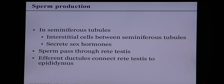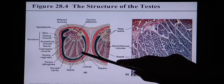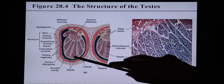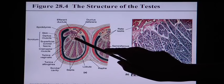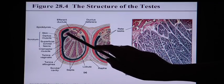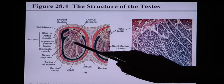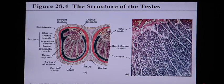Not only does sperm production happen in the testicles, but sex hormones like testosterone are also produced there. Once sperm are produced, they pass through what's called the rete testis, then into the efferent ductules, and finally to the epididymis. So the pathway is: seminiferous tubules → rete testis → efferent ductules → epididymis, which is the first E in SEVEDUP.